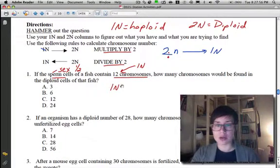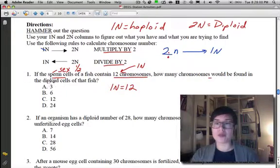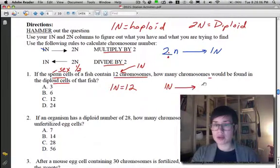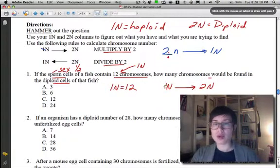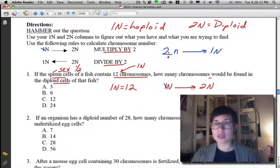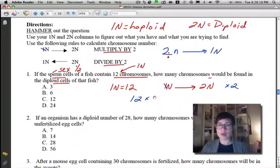So, I'm going to write that down here so that I don't get confused. Then, it asks how many chromosomes would be found in the diploid cell of that fish. So, I know my 1N number. I have to figure out my 2N number. Now, to help me remember what to do, whenever I have a 1N number, I'm going to put an X, make it an X. So, I know that I'm going to be multiplying by 2. So, I'm going to take my number 12, multiply it by 2, which gives me 24. So, the correct answer should be D for number 1.